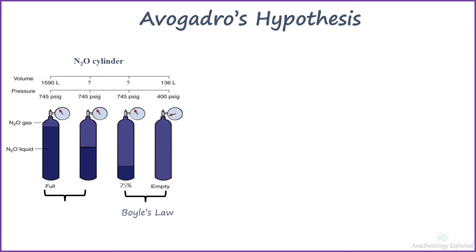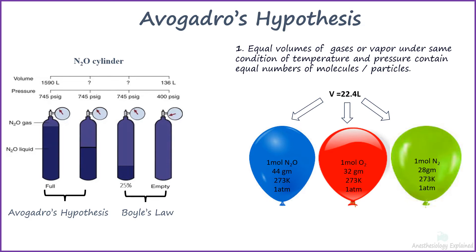The principle used is Avogadro's hypothesis. It states that equal volumes of all gases or vapor under same condition of temperature and pressure contain equal numbers of molecules. This means that if the temperature, pressure and volume are kept constant, any gas will contain the same number of molecules. Hypothetically in this diagram, 6 molecules each.